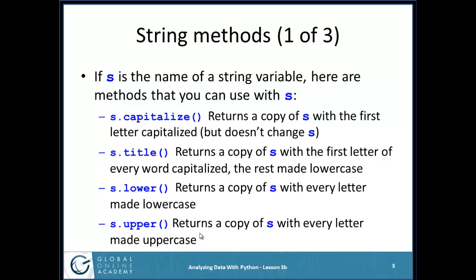List had a bunch of methods that you could use, like list variable dot append or dot extend or dot sort. There are a lot of string methods also. If S is the name of a string variable, here are methods that you can use with S, meaning the name of your variable dot, and then this function name. So, I can take any string and say dot capitalize. It will return a copy of S with the first letter capitalized. It doesn't change what's in S. None of these on this page change what's in S.